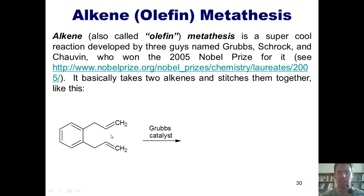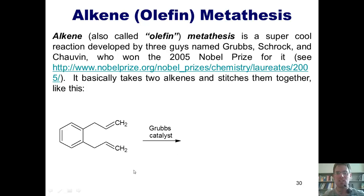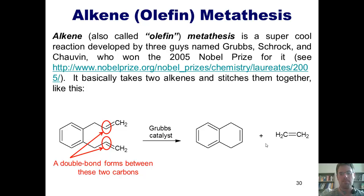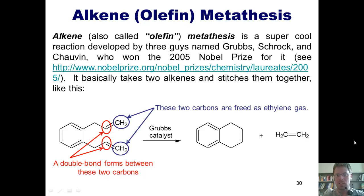I'm just looking at the alkenes shown up top and down bottom. If I react a molecule like this with an olefin metathesis catalyst, such as a Grubbs catalyst, what the catalyst does is it finds the two internal carbons in the two alkenes — which happen to be these two carbons right here — and then forms a double bond between them, as you can see in this product. These two other alkene carbons are freed as ethene gas.